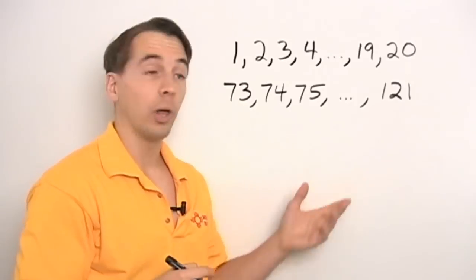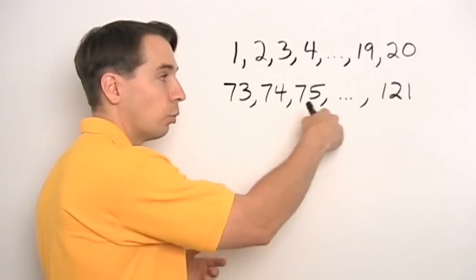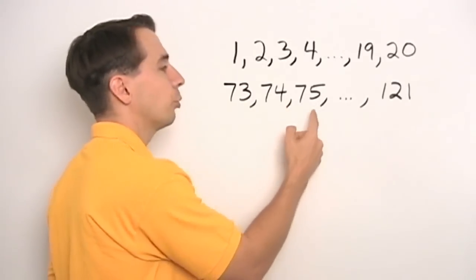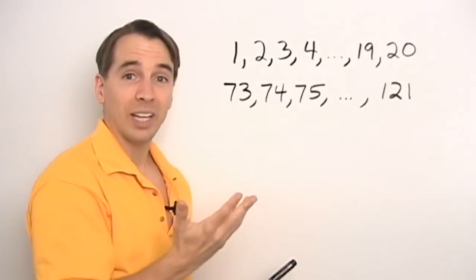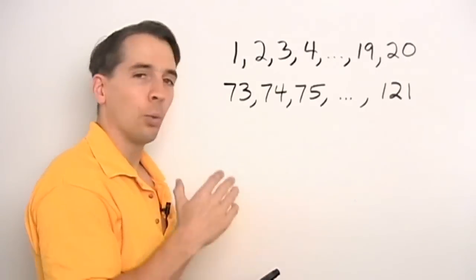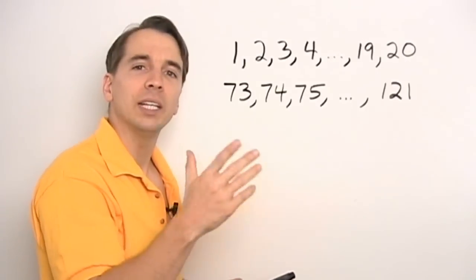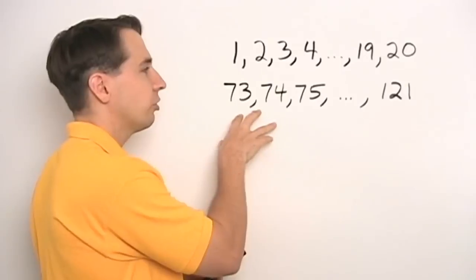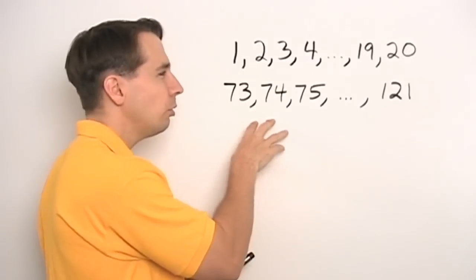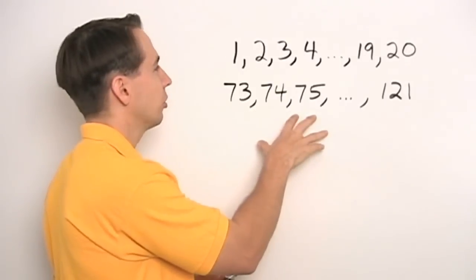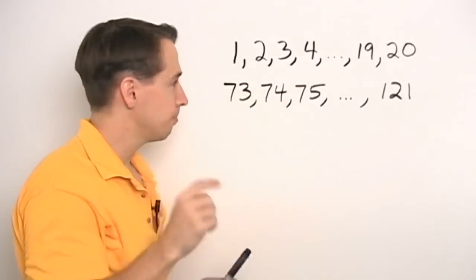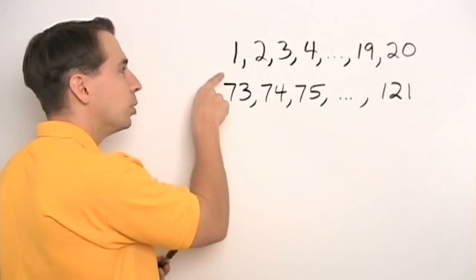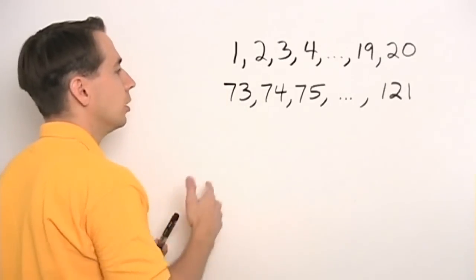Now we could just list them all out — write in every single number and then just count them off: one, two, three. But that would take a very long time. However, that one, two, three gives us an idea. If we can turn this list that we don't know how to count easily into a list we know how to count easily, well then we'll be pretty happy. And we know how to count lists that start with one.